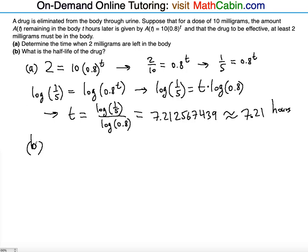Part B says, what is the half-life of the drug? Now, half-life of the drug means the time it takes for exactly one half of the drug to be absorbed and to be gone. So the time it takes for one half of the original amount of drug to be remaining in the body.